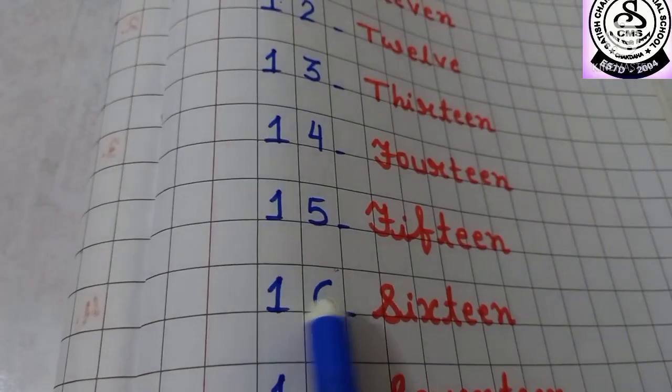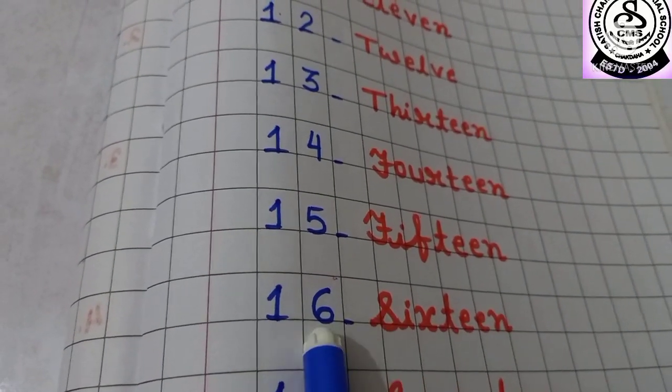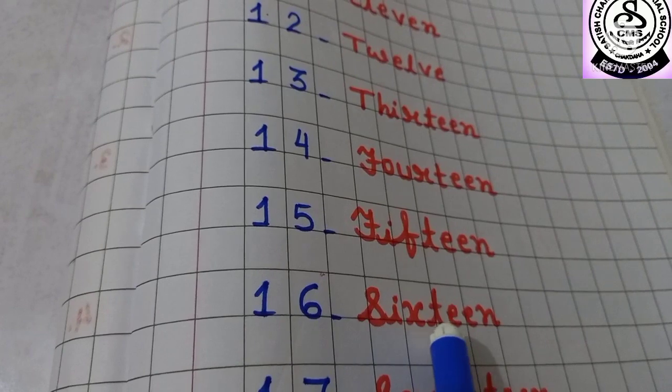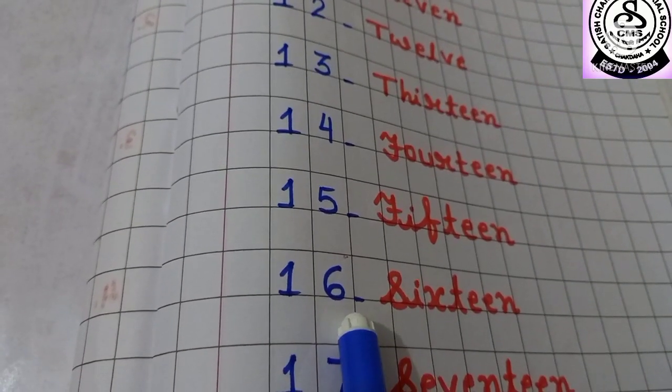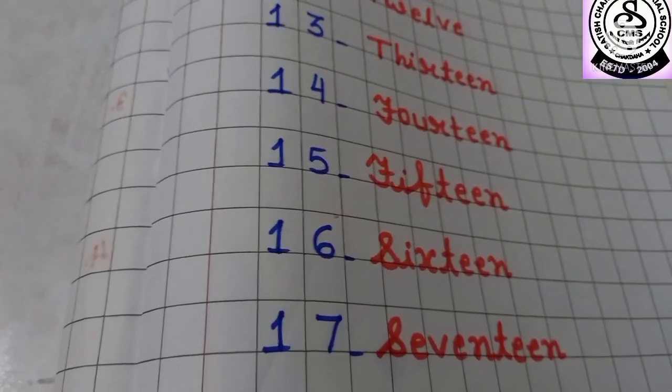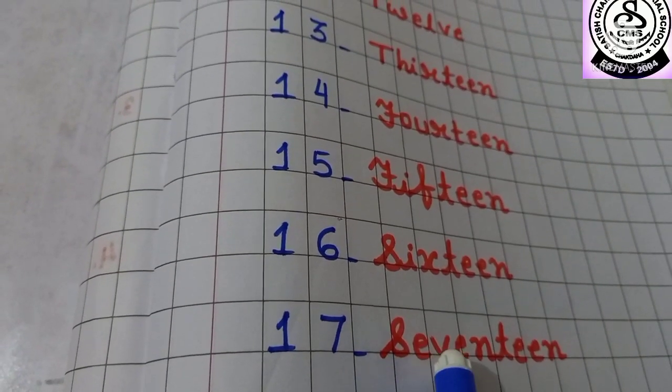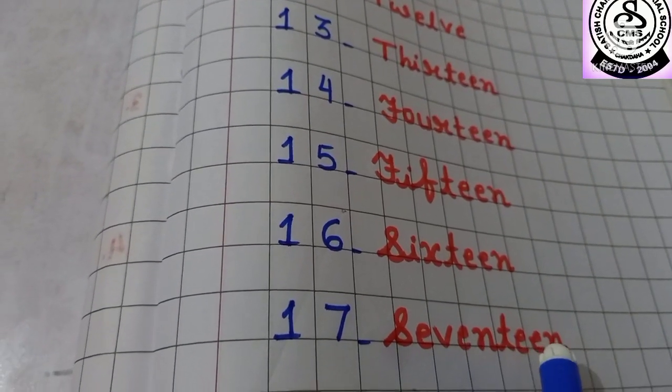Then 16. 1, 6, 16. S-I-X-T-E-E-N, sixteen. What comes after 16? Yes, 17. S-E-V-E-N-T-E-E-N, seventeen.